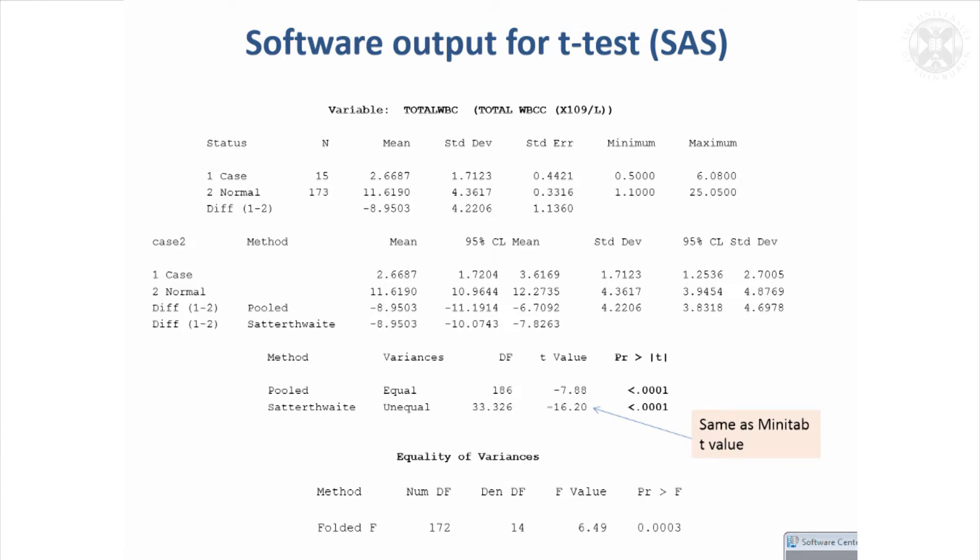An equivalent analysis in another package called SAS is different again. It gives us the mean values and a measure of their accuracy by the standard error. It repeats that and then gives us the differences, which again is minus 8.95 between the groups. SAS actually gives an option of working with equal variances for the two groups or unequal, whereas Minitab just used unequal variances.